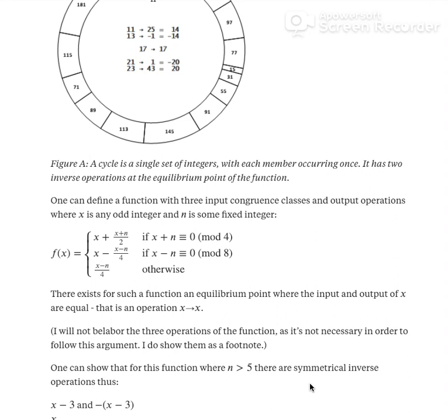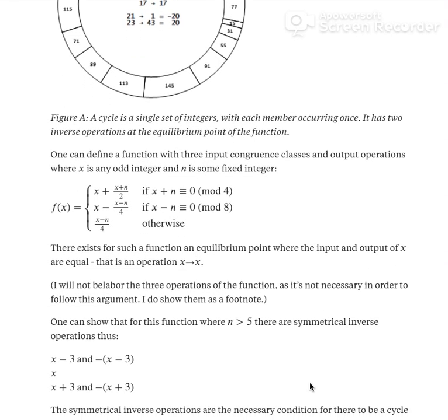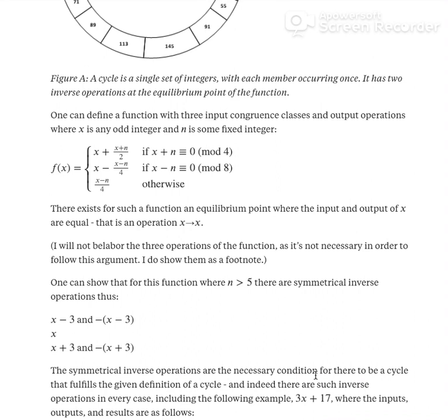There exists for such a function an equilibrium point where the input and output of x are equal. That is, there's an operation input x, output x, and that's what we just mentioned before for 17-17. One can show that for this function where n is greater than 5, there is a symmetrical inverse operation such as where x is the equilibrium number, x-3 and -(x-3) is an inverse operation.